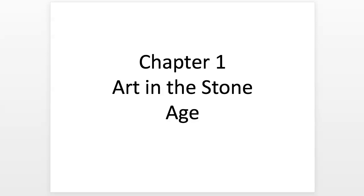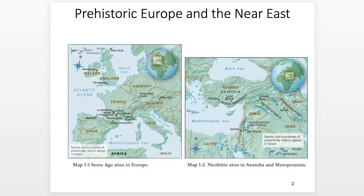Alright class, we're going to be talking about Chapter 1, Art in the Stone Age. I want you to be reading the pages that correspond to the lectures, so you should have been reading the introduction already and now Chapter 1. Most of this book and our course covers prehistoric Europe and some of the Near East, but it's primarily about Western Europe and the areas considered part of the canon of Western art history.